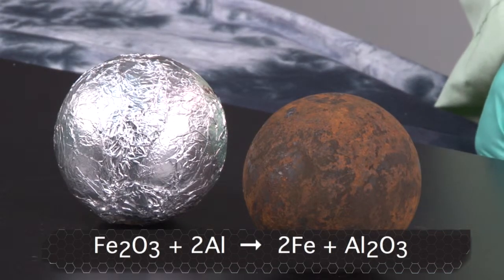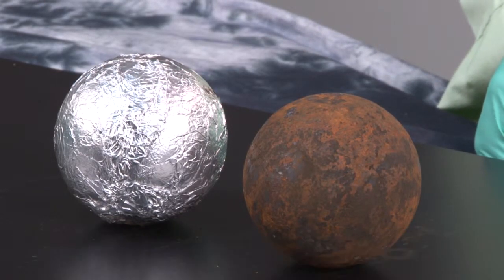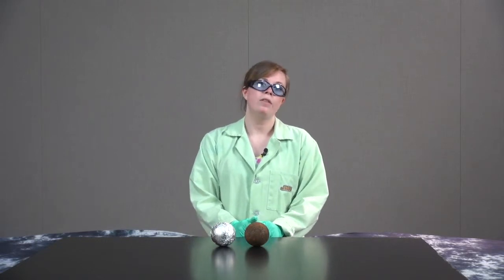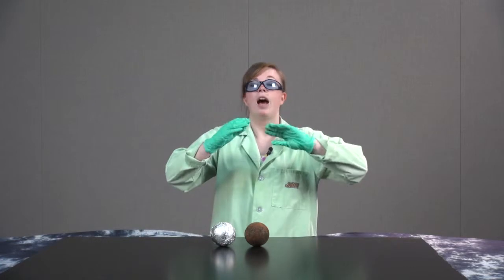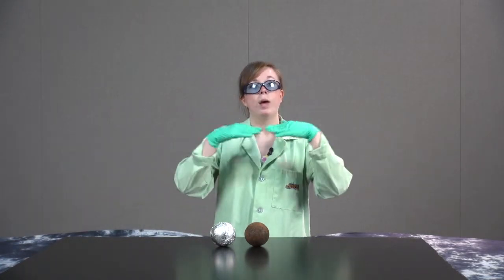It produces molten iron and aluminum oxide. The reaction is very exothermic and can be quite dangerous. The molten iron that is produced mixes with the iron of the railroad tracks to weld them together.